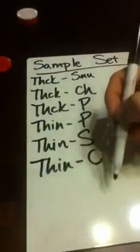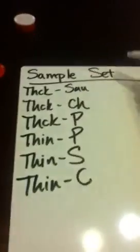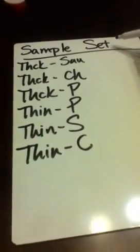For my thin options, I can have thin and pepperoni, thin and sausage, and thin and cheese. When you do probability, it's important that you are able to write out all of your options and make a sample set of the options.